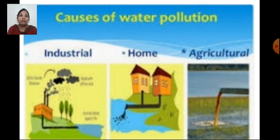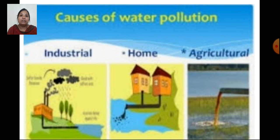Waste from homes — sewage — when let into water bodies contaminates the water, as it contains many chemicals and germs. Agricultural waste is also a cause: in agriculture, chemicals called pesticides and weedicides are used to kill pests and weeds. When it rains, these chemicals mix with rainwater, seep into the soil, and contaminate groundwater, making the agricultural sector responsible for water pollution.